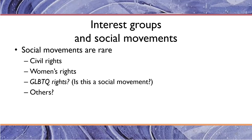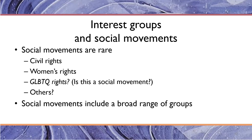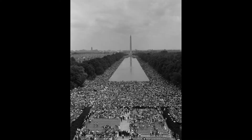Social movements include a broad range of groups and are another way that groups coalesce together. If you take the March on Washington in 1963, at which Martin Luther King gave the 'I Have a Dream' speech, that was an event organized by a number of civil rights, labor, and other groups. Social movements are another way that groups coalesce to influence public policymaking.